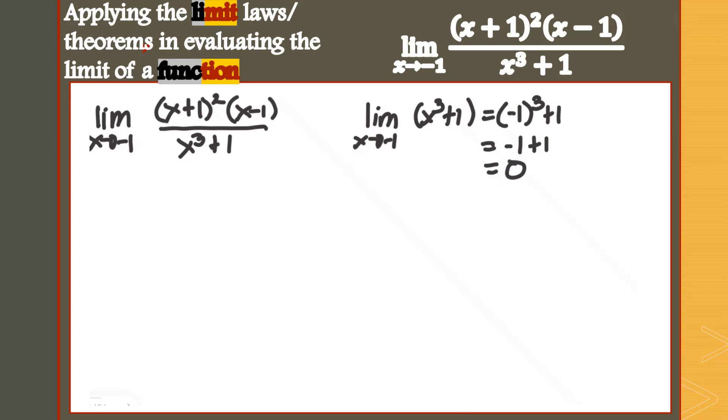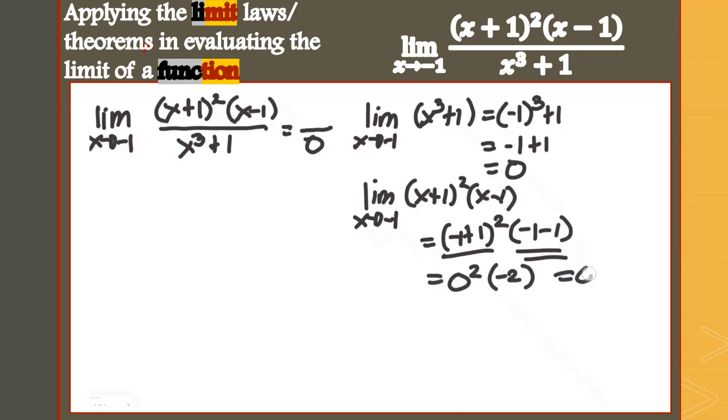If it's 0 now, we could be expecting a limit that will not exist because we have a denominator of 0. However, if you examine the numerator, (x+1)² times (x-1) as x approaches negative 1, when you look at the substitution, you have (negative 1 plus 1)² times (negative 1 minus 1). This is 0 squared times negative 2, which gives us 0 as well. So we have another indeterminate form, 0 over 0.